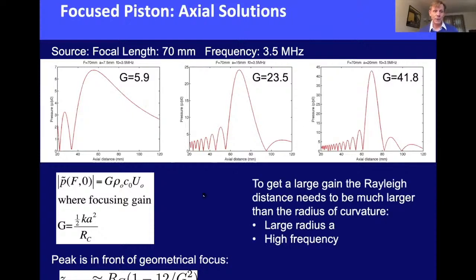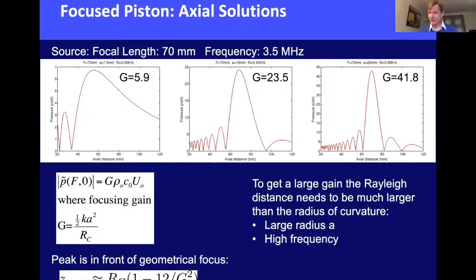For a highly focused transducer, the gain should be large. The radius of curvature is generally fixed by the treatment depth. The two design parameters are frequency (which changes k) and aperture a. To maximize gain, you want the Rayleigh distance much larger than the radius of curvature — the largest aperture possible and the highest frequency that still allows penetration to the target depth.